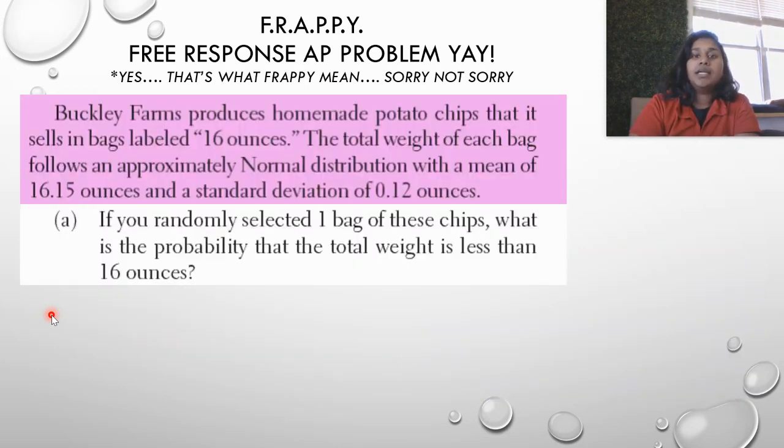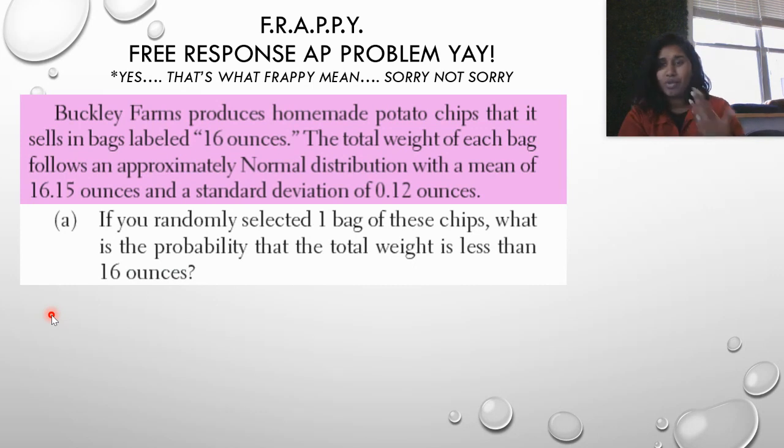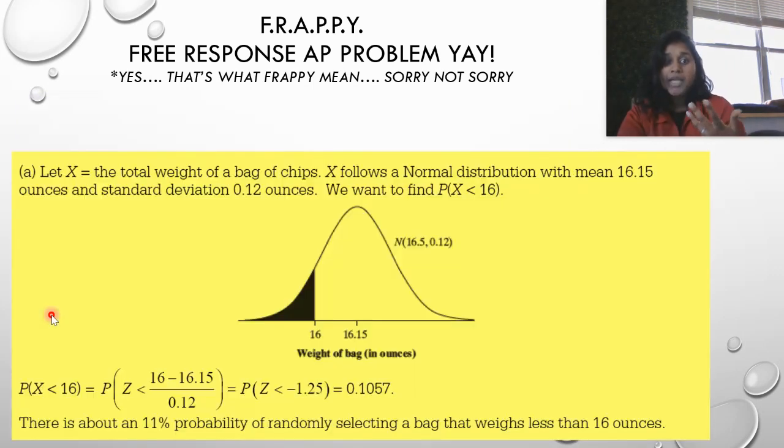Buckley Farms produces homemade potato chips that it sells in bags labeled 16 ounces. The total weight of each bag follows an approximately normal distribution with a mean of 16.15 ounces and a standard deviation of 0.12 ounces. If you randomly selected one bag of these chips, what is the probability that the total weight is less than 16 ounces? I'm looking at a probability, so I'm thinking z-scores, normal distribution, all sorts of important stuff.